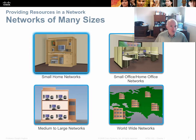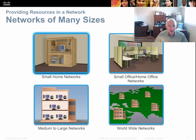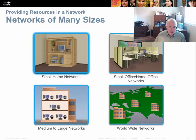Most homes now have a small home network with a router or modem that brings the internet into the home. Most small offices are also on the internet, and medium and large companies definitely are. We connect all three together to create worldwide networks — a linkage of all our networks into one global network we call the internet.